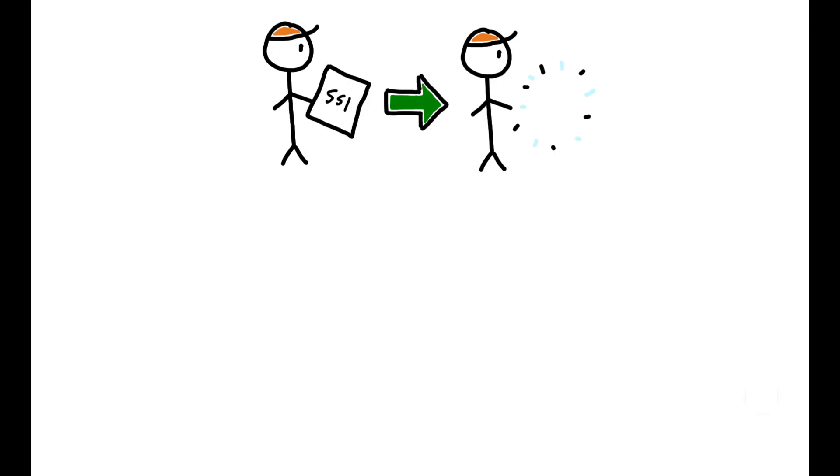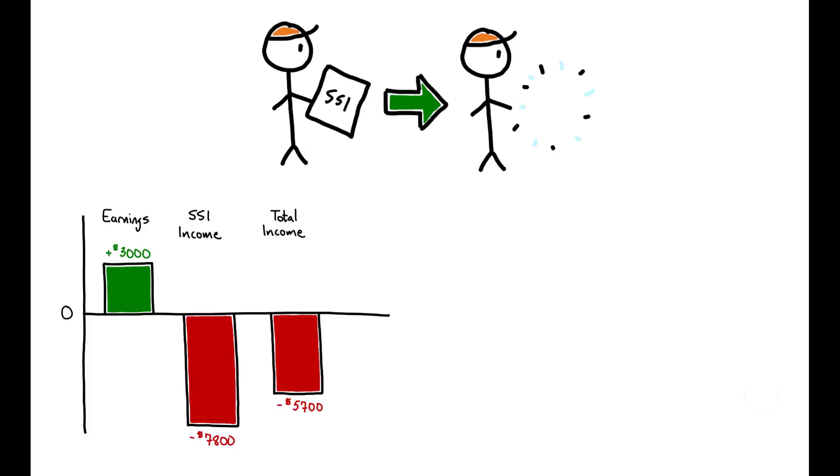Instead, removal leads to a large decline in income and removes the insurance provided by a stable income. In this context, it does not appear to be the case that welfare inhibits success.